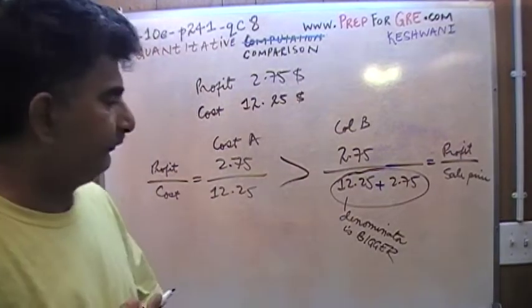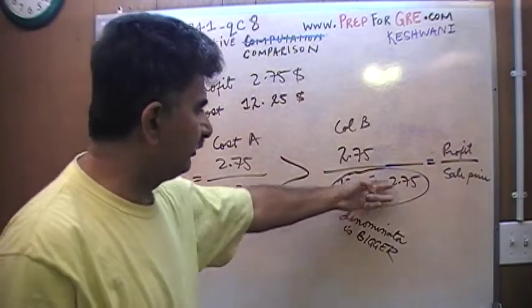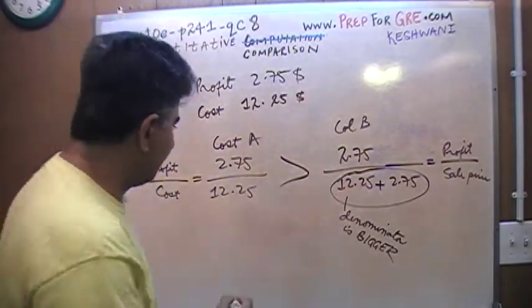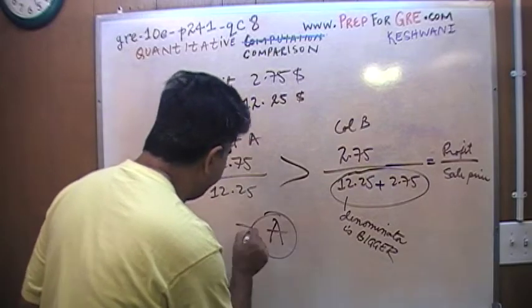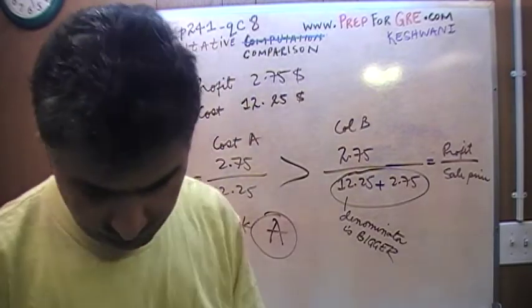That's all, we are done. This quantity is smaller because the denominator is bigger, this quantity is bigger. The answer is A.